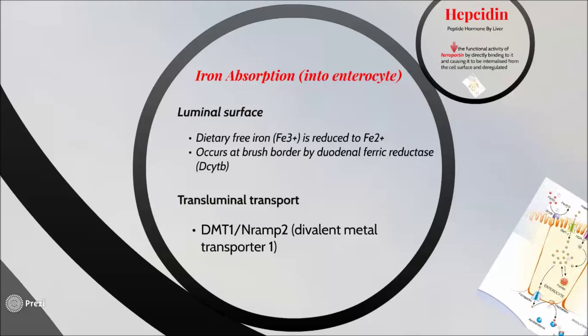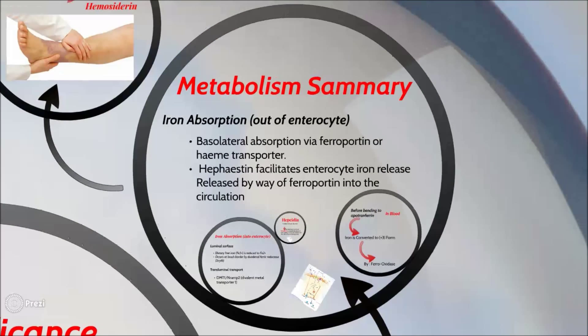Most dietary iron is in ferric form until it reaches the hydrochloric acid of the stomach, where it is transferred into ferrous form. After that, a protein called apotransferrin attaches to the iron and is transformed into transferrin. Transferrin then heads to the upper part of the intestine called the duodenum, where absorption of iron occurs. At the lumen of the duodenum, duodenal ferric reductase transforms iron into ferrous form to be absorbed by divalent metal transporter one.